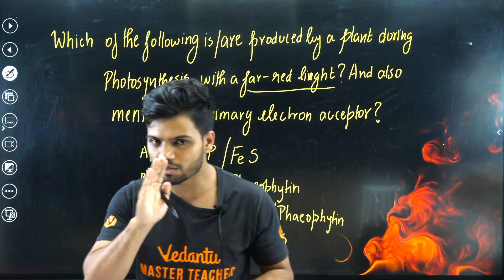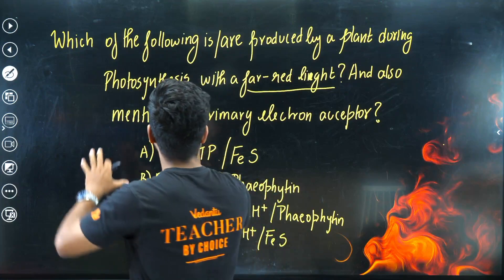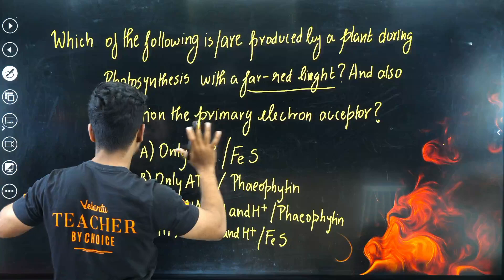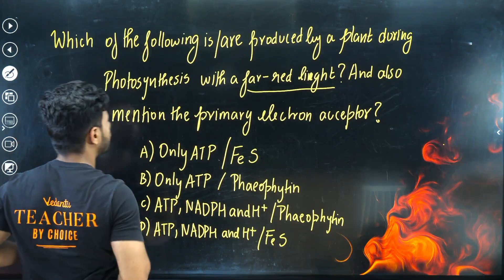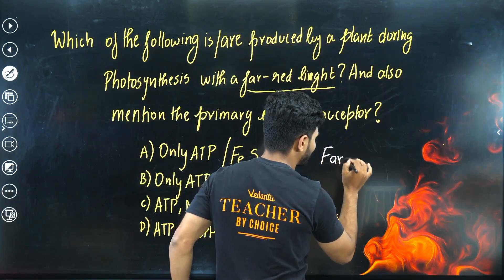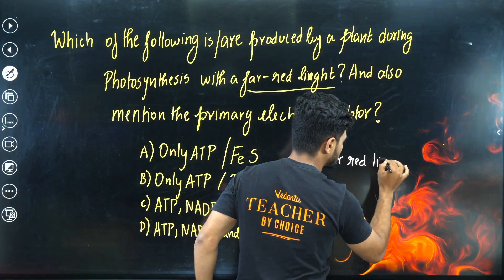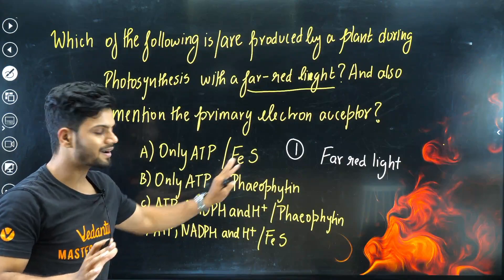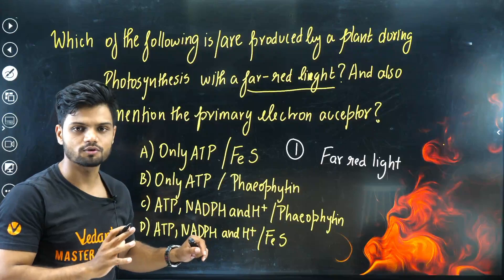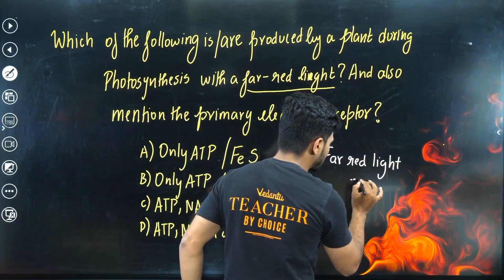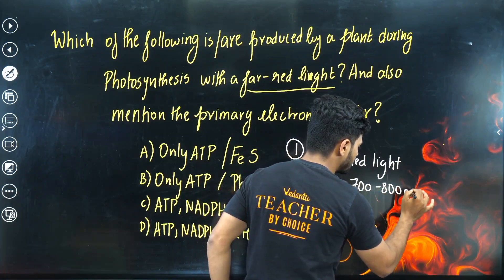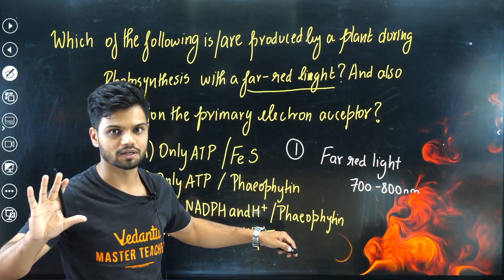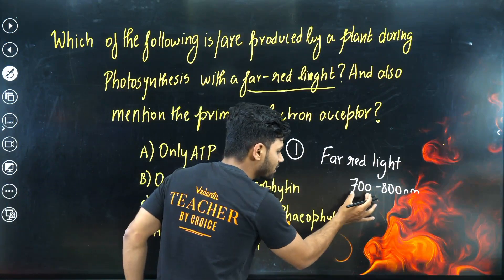Let me bring up the question one more time. It is asking which products are produced by a plant during photosynthesis with far-red light. First, you need to understand the far-red light concept. Far-red light has a wavelength generally between 700 to 800 nanometers — this is concept number one.